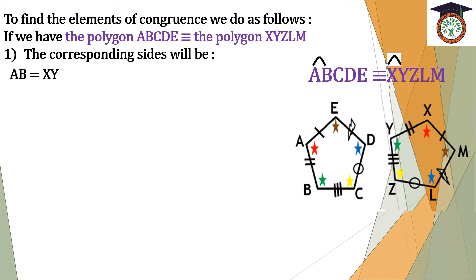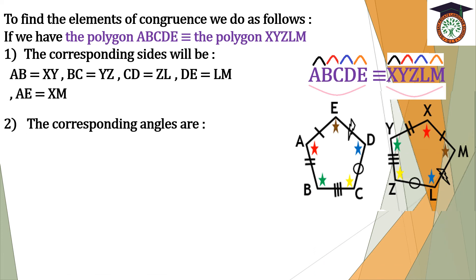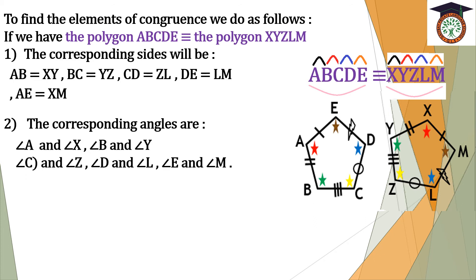Next, DE and LM. And the last one is AE equals XM. Number two, the corresponding angles are: angle A and angle X, angle B and angle Y, angle C and angle Z, angle D and angle L, angle E and angle M.